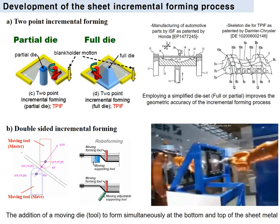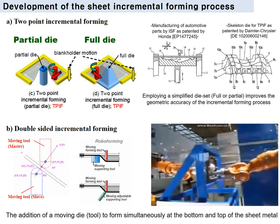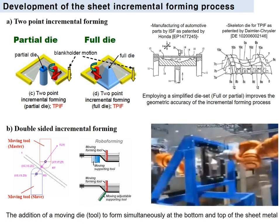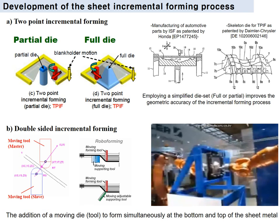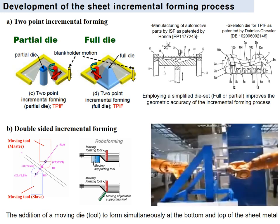In order to increase geometric accuracy, the two-point incremental forming process was developed. Partial and pull dies were employed in many applications. Nowadays, 3D printing and sectional die sets are employed as die sets in the two-point incremental forming process. Employing a simplified die set improves geometric accuracy. Also, the double-sided incremental forming process was developed. Instead of a die set, a tool with a robot arm is employed, with an additional moving tool supporting the sheet simultaneously from the bottom and top.